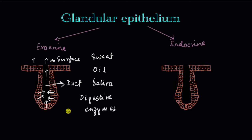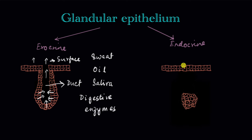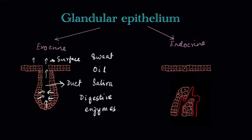Now let's look at what happens to the endocrine glands. Initially they have ducts just like the exocrine glands, but as they keep developing the duct disappears and they lose touch with the surface. The endocrine gland does not have a connection with the surface anymore. Instead of secreting into a duct, endocrine glands secrete their substances into the bloodstream. When endocrine glands are fully developed, blood capillaries run through them and whatever the gland secretes enters the bloodstream via these capillaries.